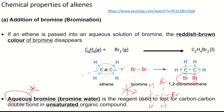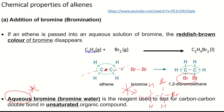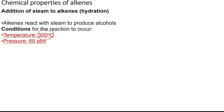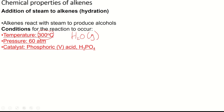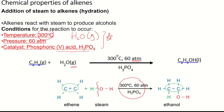The next reaction is hydration — adding water. This reaction occurs at high temperature of 300°C, at a pressure of 60 atmospheres, with phosphoric acid as catalyst. At these conditions, water exists as steam (H2O gas). The double bond is broken, one H goes to one carbon and the OH goes to the other carbon. Write the conditions: temperature and pressure above the arrow, catalyst below the arrow. Underline the word 'steam'.